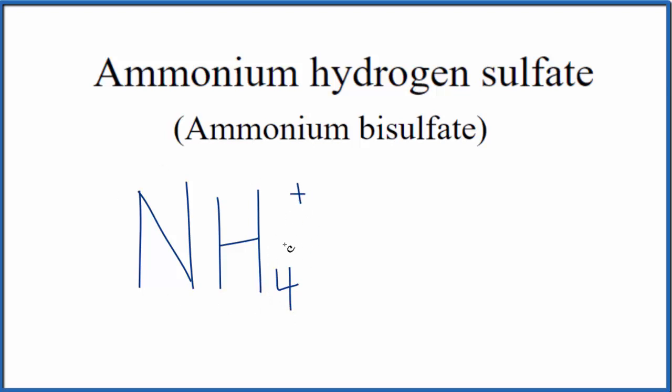So that's our ammonium ion, and then hydrogen sulfate, or the bisulfate. This is another polyatomic ion. So we can kind of tell hydrogen sulfate will have a hydrogen and then a sulfate ion.